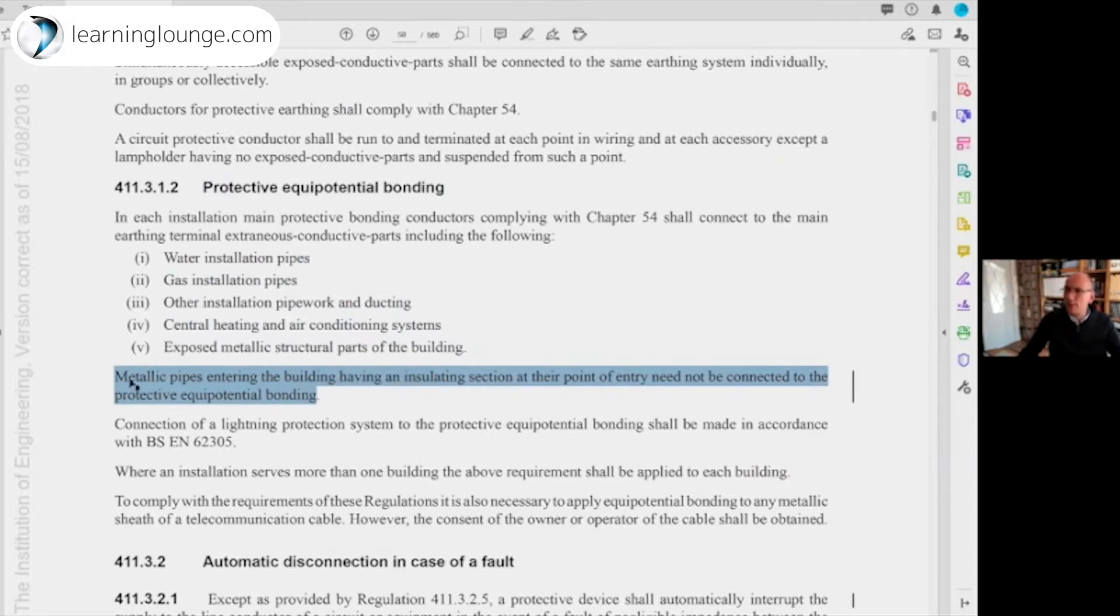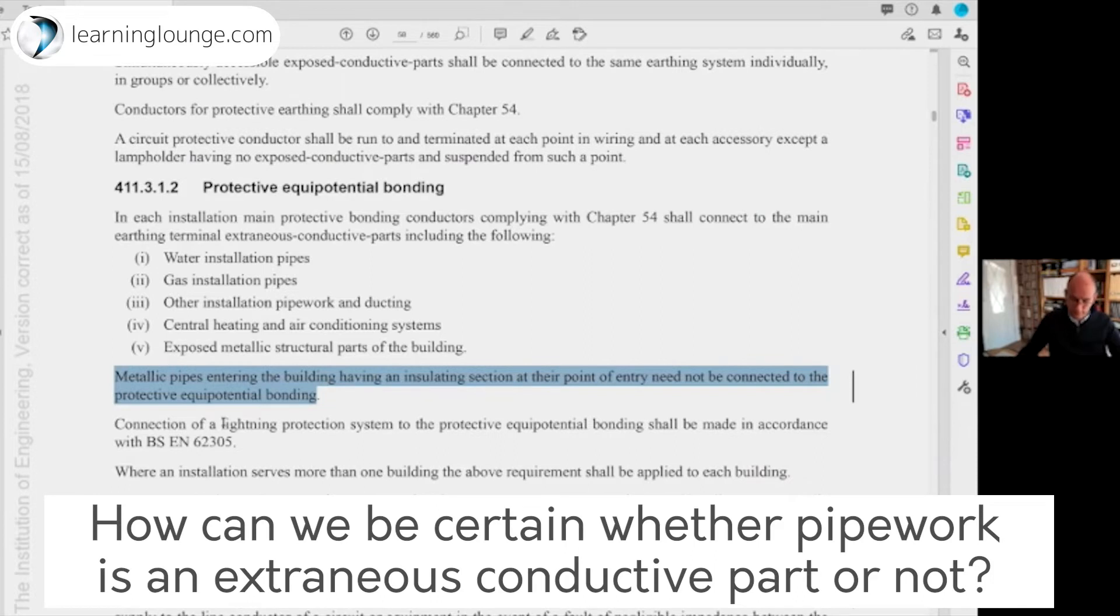What it states is that metallic pipes entering the building having an insulating section at their point of entry need not be connected to the protective bonding. It's not quite as clear as it could be. I think we might see some changes when amendment 2 comes out. Essentially what it means is if you've got plastic pipework coming into the building, you do not need to main bond the gas or the water installation pipes. That really put into words simple, ridiculously simple and clear words, but there are still exceptions aren't there?